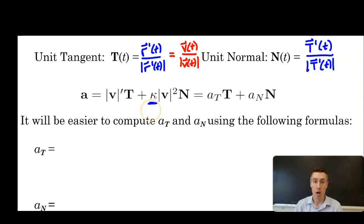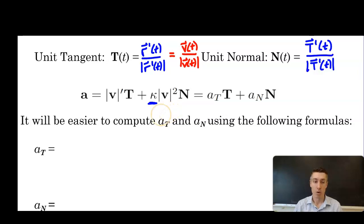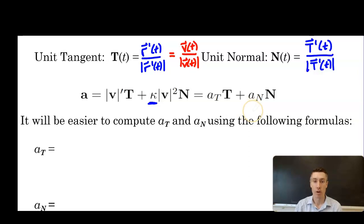This formula is great — we know how to find speed, derivatives, and curvature — but in practical terms, finding the curvature every time we want to write acceleration as the sum of two vectors would be quite tedious. So we want to find a better formula for both the tangential and normal components of acceleration.